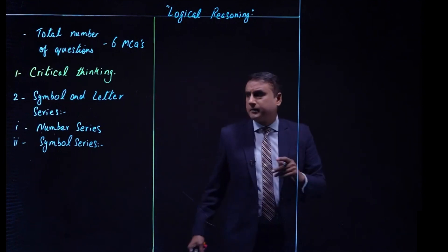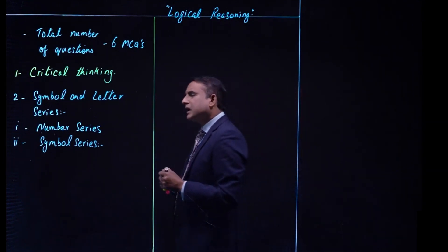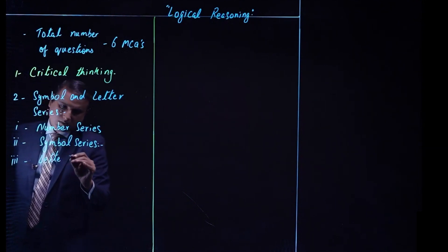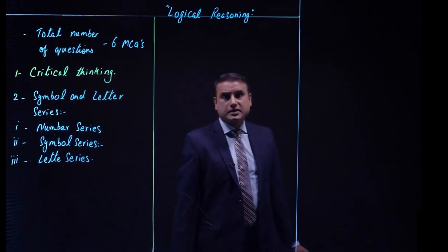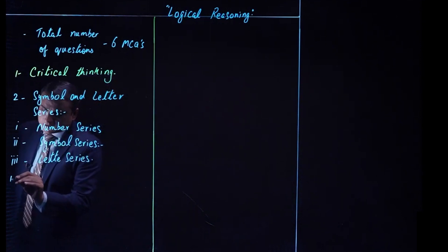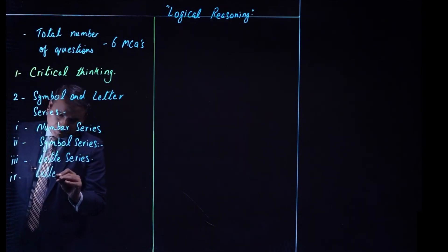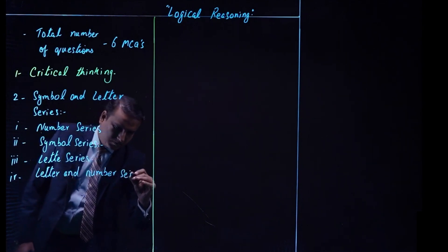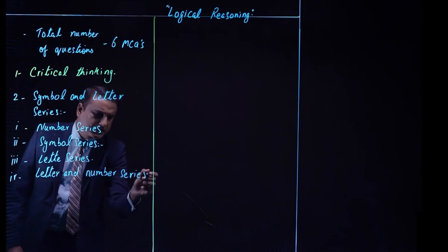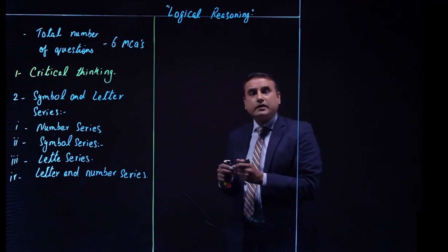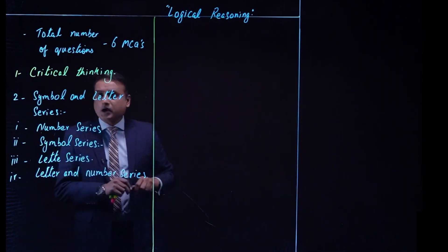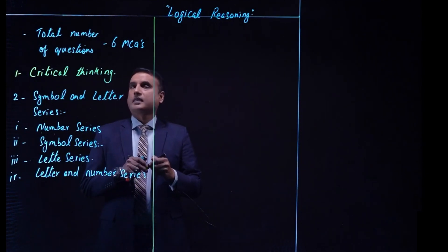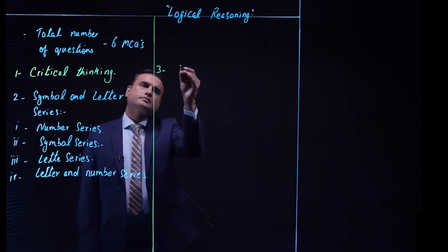We will discuss symbol series in detail in separate lectures. The third subcategory is letter series, and sometimes there is also a combined letter and number series. These subcategories are all related to the second group called symbol and letter series. Moving forward, the third type is logical deductions.